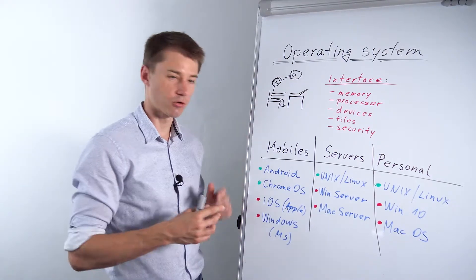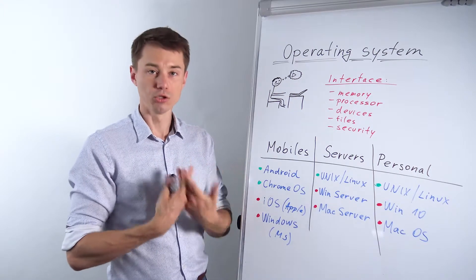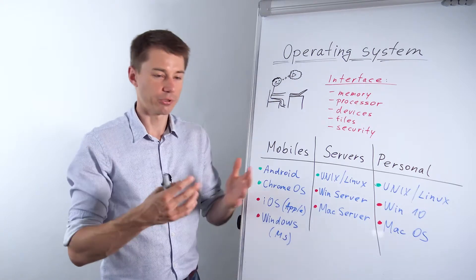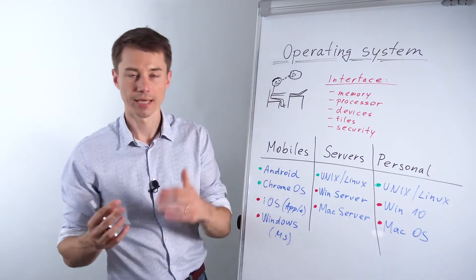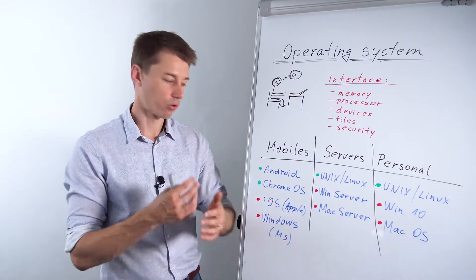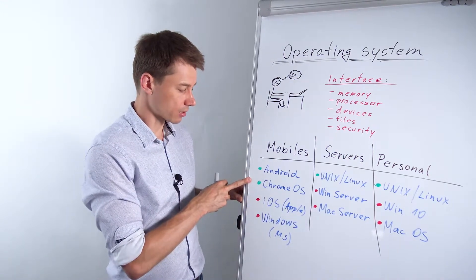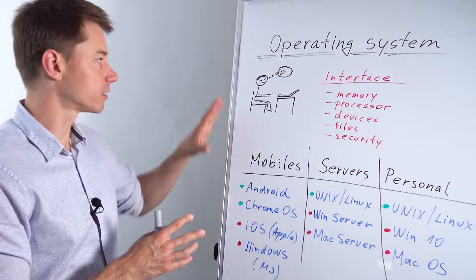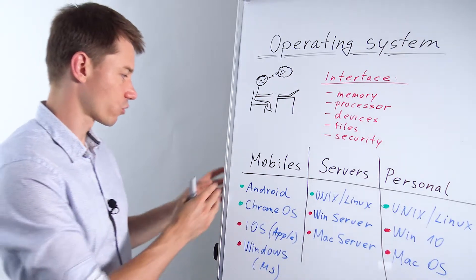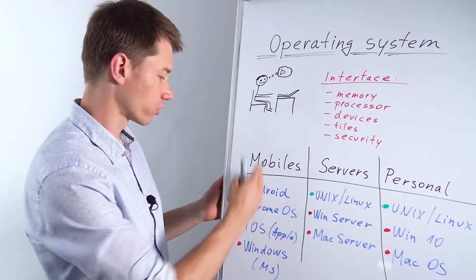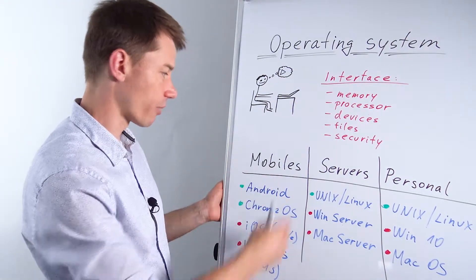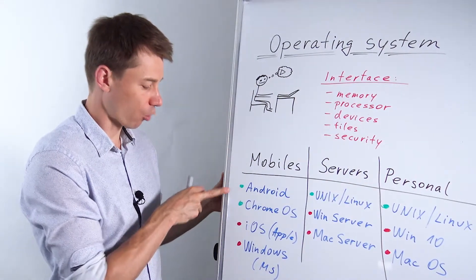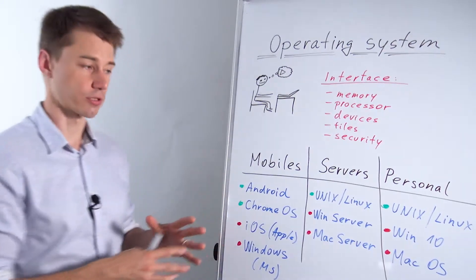I wanted to highlight what are the differences and segment it a little so you guys see what operating systems are for mobiles, servers and personal. And I also indicated which ones are open source and which ones are closed source.